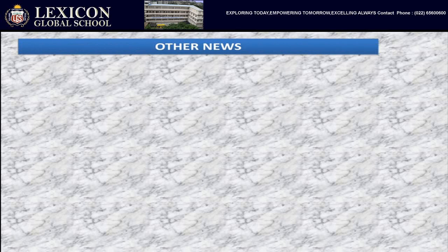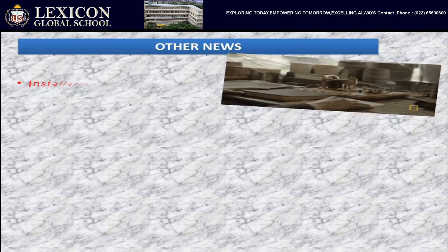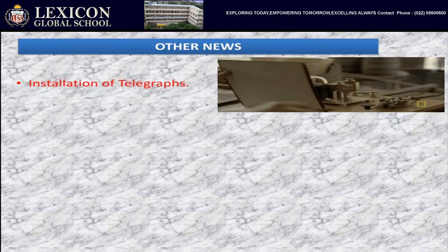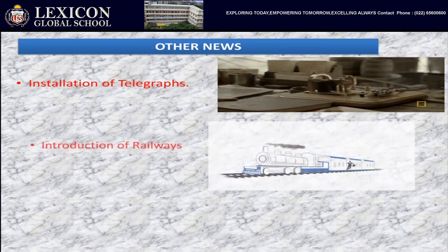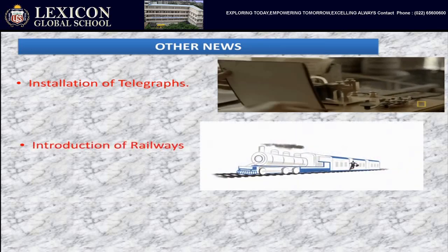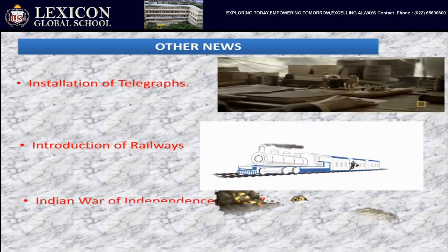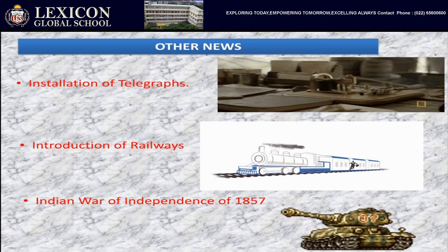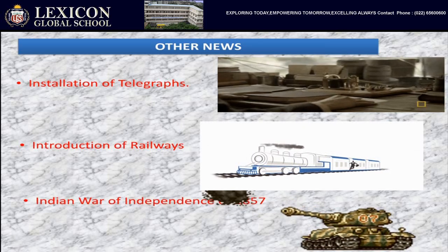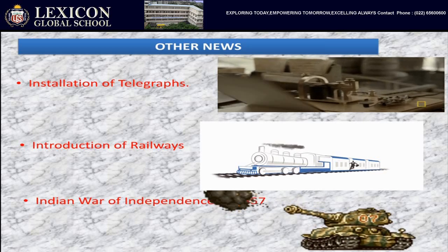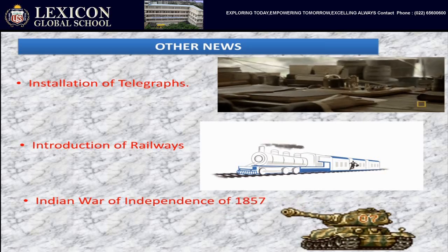Other than these things, there were many other news covered by Dhyanoday. The news of installation of telegraph, the news of starting of railways in our country, and the news of the Indian War of Independence of 1857 was covered by this newspaper.